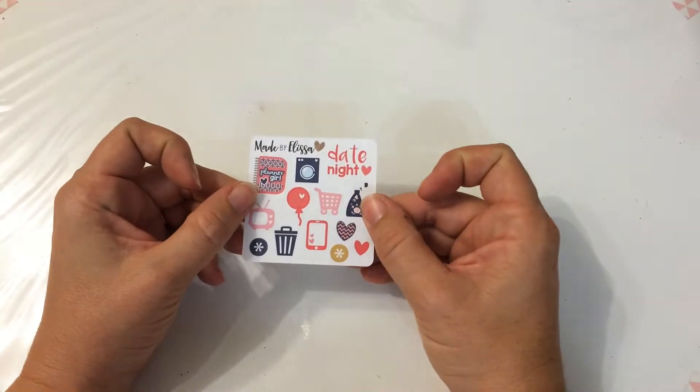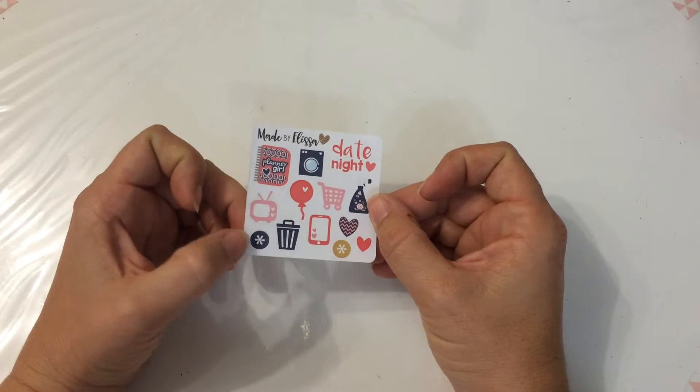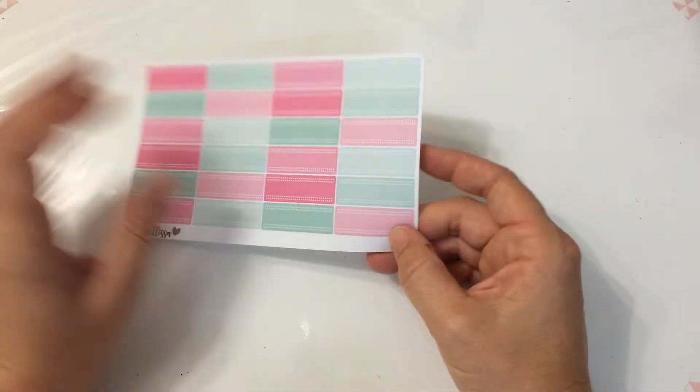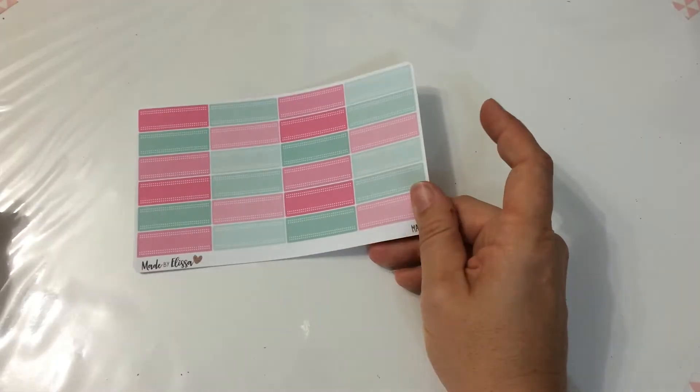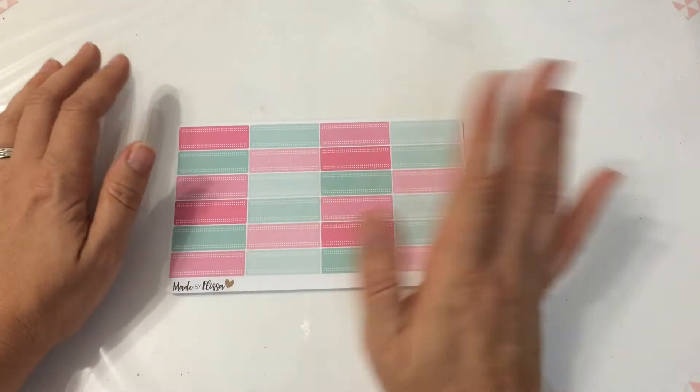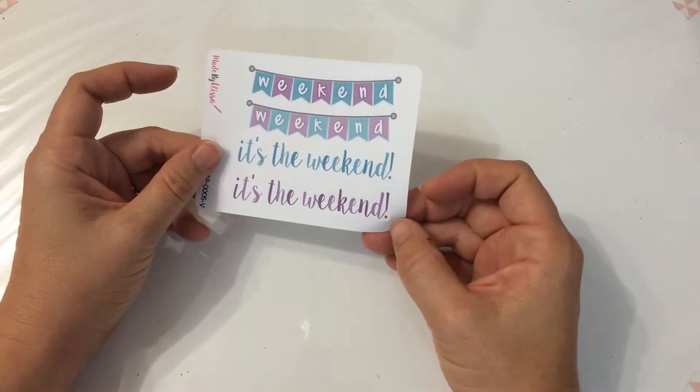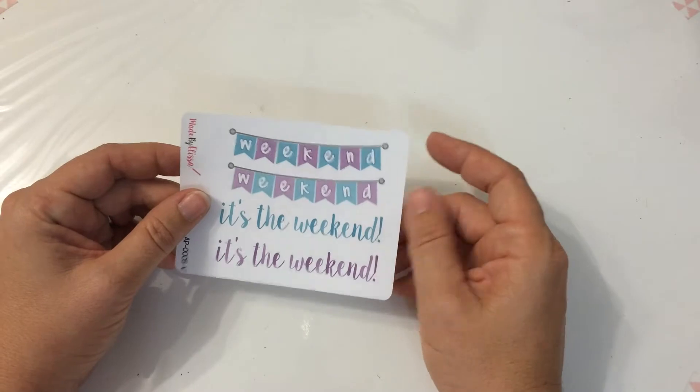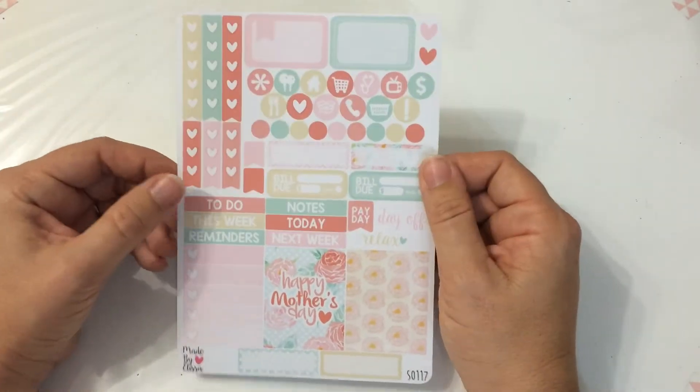My first haul is from Made by Alyssa and it came with this really cute little sampler. This one the double dots in pinks. I think these are actually colors for the Erin Condren but I have a happy planner so I just pick colors that I like. I order so many stickers I can never remember what I get.